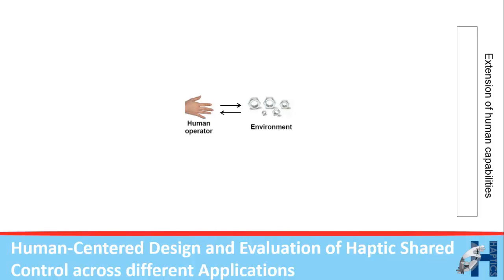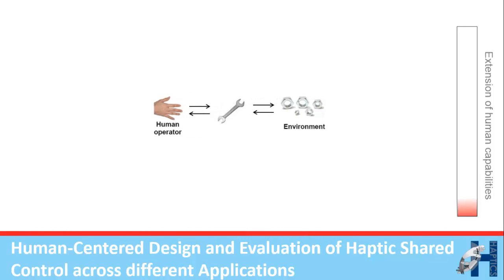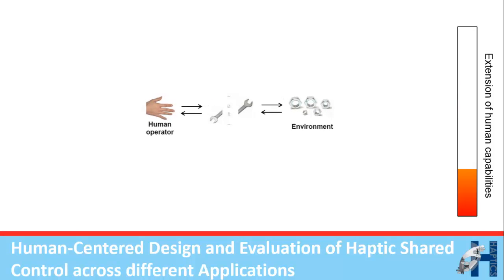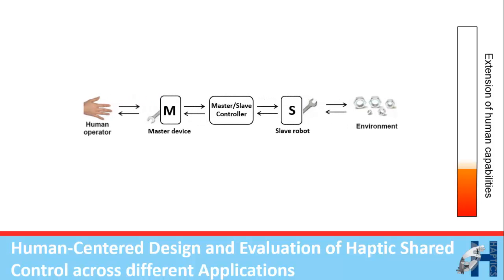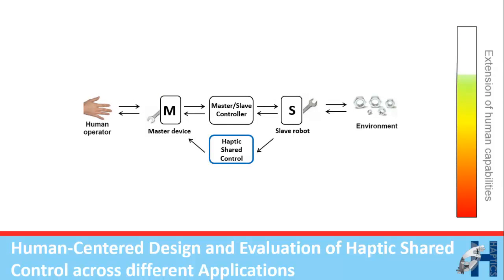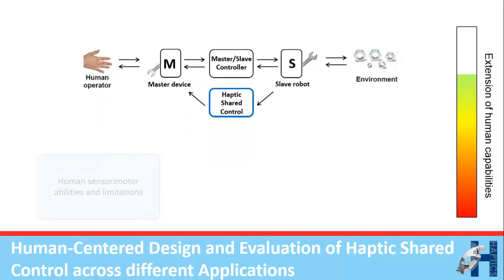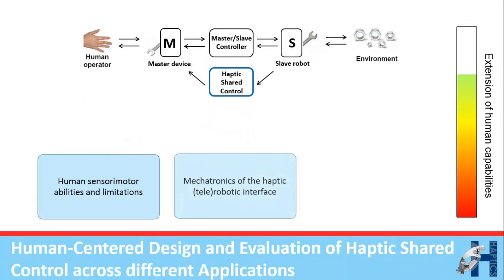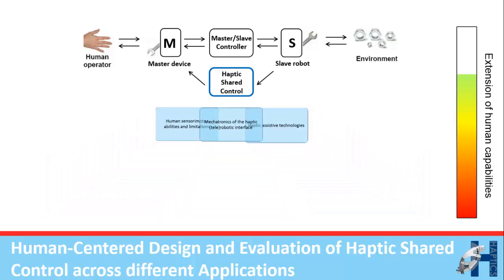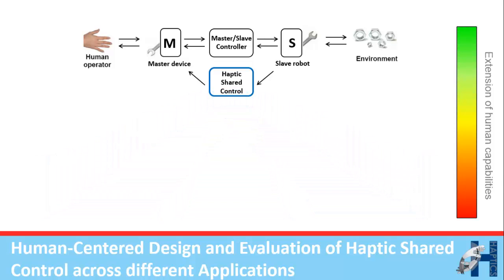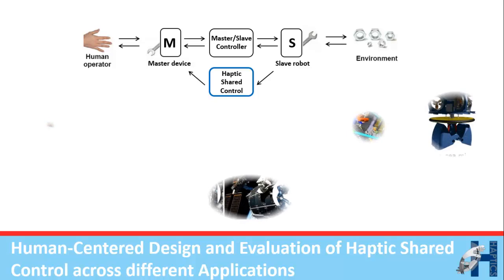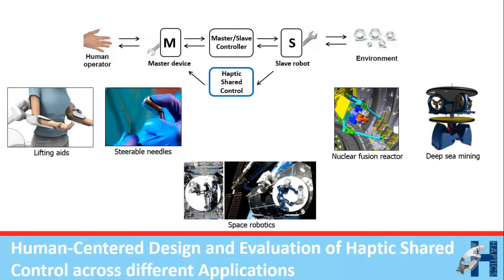Human Centered Design and Evaluation of Haptic Shared Control Across Different Applications is a tutorial that focuses on providing design and evaluation guidelines from three important perspectives: Human Sensory Motor Abilities and Limitations, Mechatronic Properties of the Haptic Telerobot Robotic Interface, and Haptic Assistive Technologies. These areas influence each other in their impact on human-in-the-loop performance in real-life tasks.